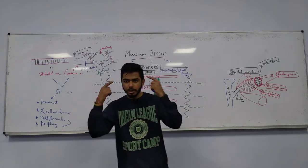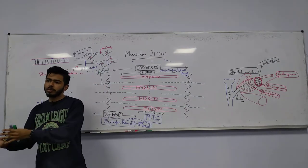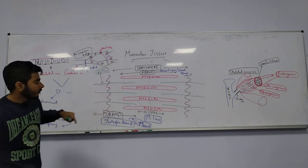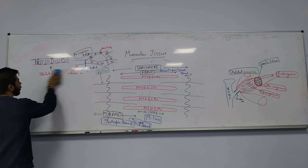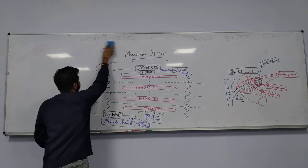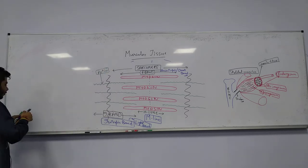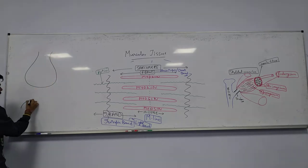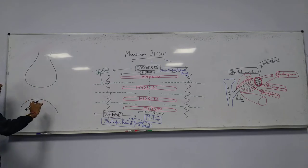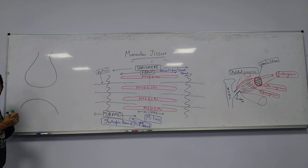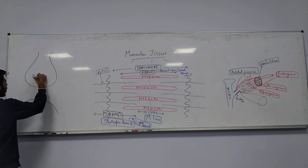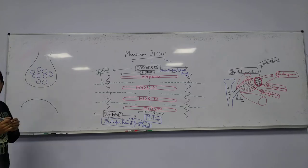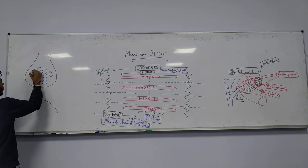Now let's talk about the neuromuscular junction — how the action potential comes, how the muscles contract, and how the nerves conduct the action potential towards the muscles. This is the nerve fiber; this is the presynaptic cleft, this is the postsynaptic, and in between is the synaptic gap. We have synaptic vesicles inside the presynaptic membrane.